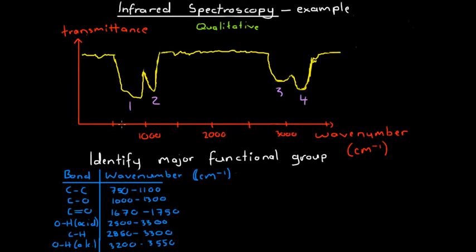We've got four troughs on our spectrum. Trough number one is between a wave number of about 700 and 1000. That's the only bond that would absorb infrared radiation in that wave number range, which is a carbon-carbon bond. So trough number one is caused by a carbon-carbon bond.